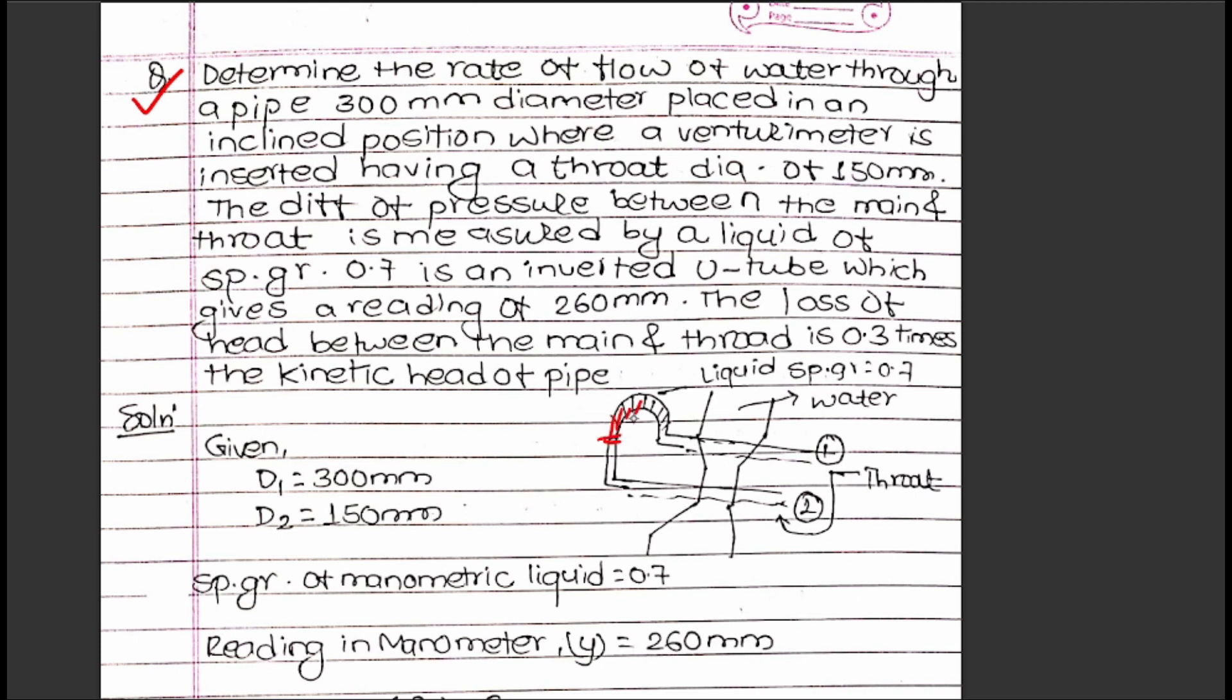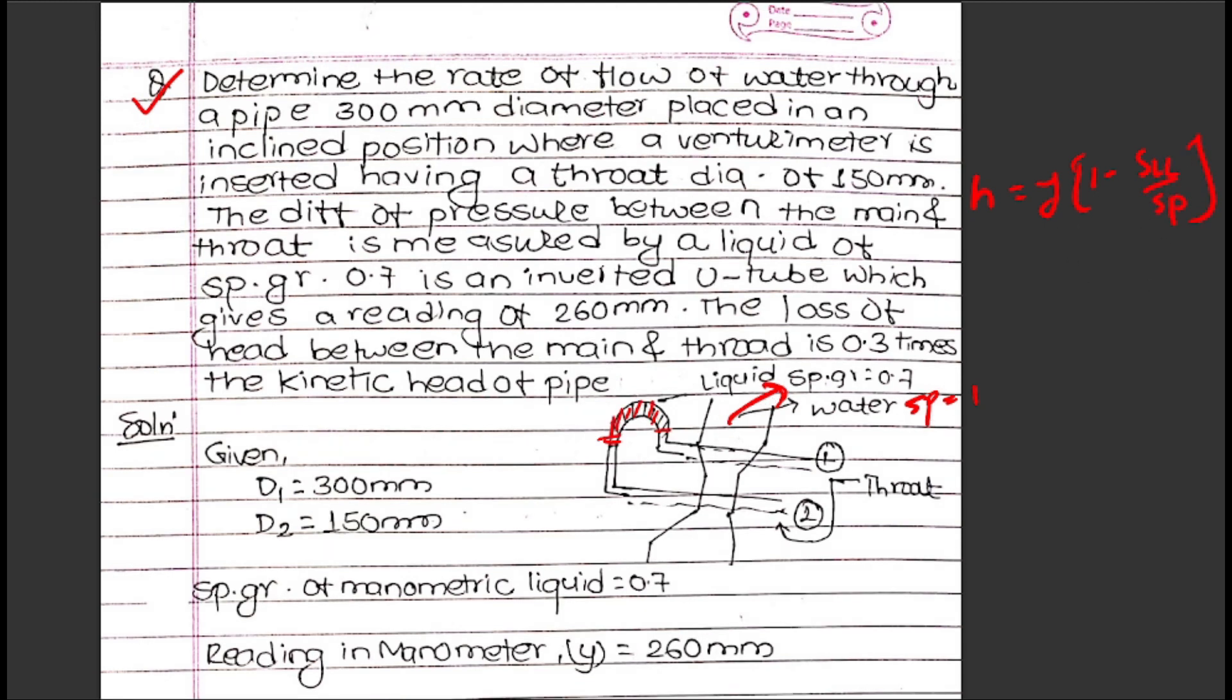The manometric liquid has specific gravity 0.7 and water flows in the pipe with specific gravity 1. The differential pressure between section 1 and section 2 is given by the formula: h = (s_l/s_p - 1) times the reading, where s_l is the specific gravity of the manometric liquid.